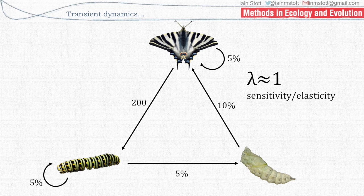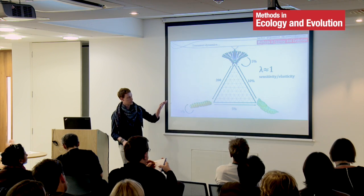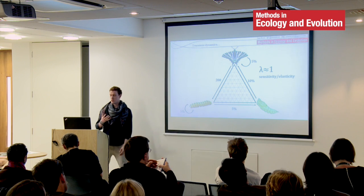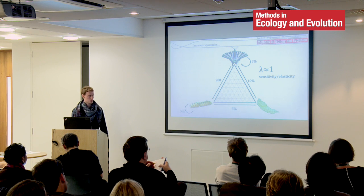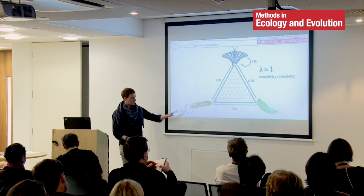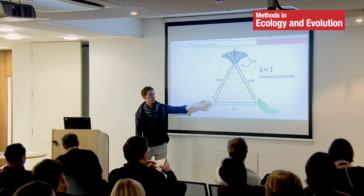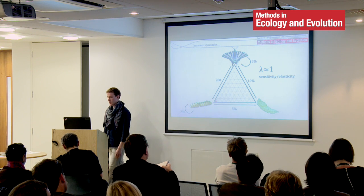But there are these things called transient dynamics which screw with all of this. Transient dynamics happen when the population is not at its stable stage structure. Here we have a triangle, and the closer you are to a corner of the triangle, the more of each stage you have in the population — the ratio always adds up to one. In this case, the stable stage structure is somewhere down here: lots and lots of caterpillars, not very much of anything else, probably because there's very low survival and very high fecundity.